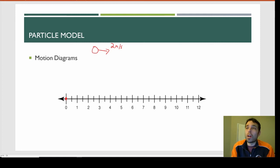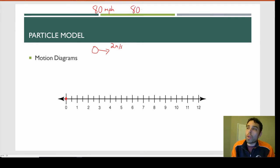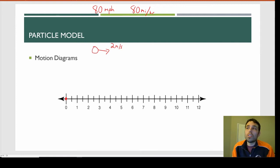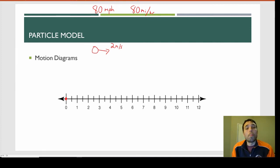You might not be familiar with meters per second, but I'm sure you're familiar with something like 80 miles per hour. That means if you travel at 80 miles per hour for exactly one hour, you go 80 miles. We're doing the same thing here, except instead of miles we're using meters, and instead of hours we're using seconds. So if we're going two meters per second, we go two meters in one second.